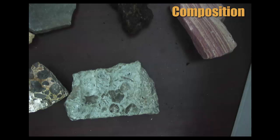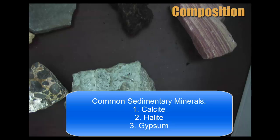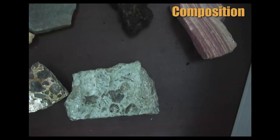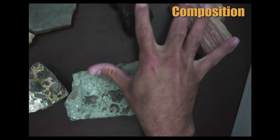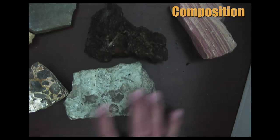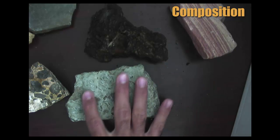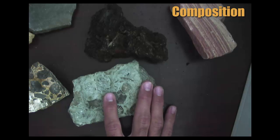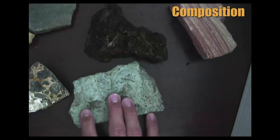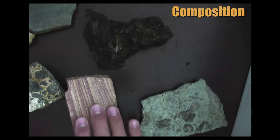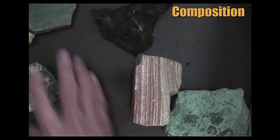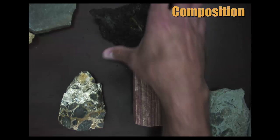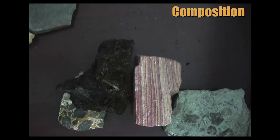So composition-wise, you can describe a sedimentary rock as being a mineral — the common ones being halite, gypsum, or calcite. You could also describe what it's made of: a bunch of fossils in a calcite matrix, a bunch of sand grains, large pebbles, or plant materials. That would be another way to describe its composition — it doesn't just have to be the minerals.